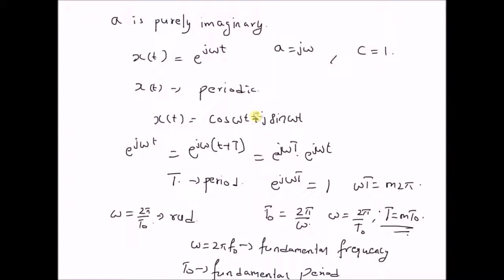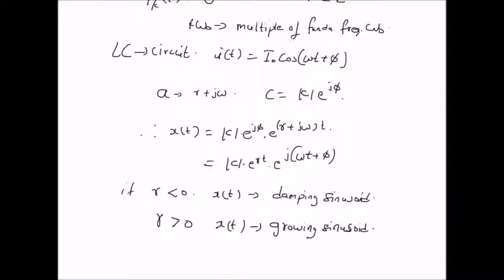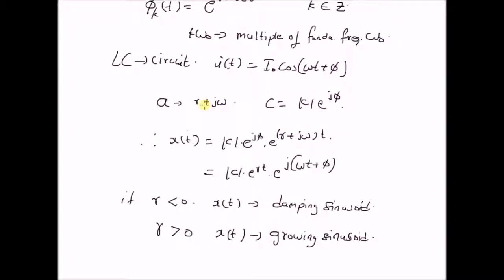And in the most general case, where a is a fully complex number with both a real and an imaginary component, x(t) is either a damping sinusoid or a growing sinusoid based on the sign of the real component r.